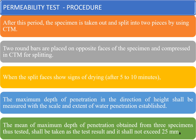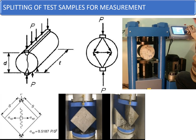The split faces show signs of drying after five to ten minutes. The maximum depth of penetration in the direction of height is measured with a scale and the extent of water penetration is established. The mean of the maximum depth of penetration obtained from three specimens shall be taken as the test result, and it shall be a maximum of 25 millimeters or the cover for which that particular concrete element is being poured.